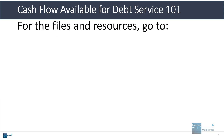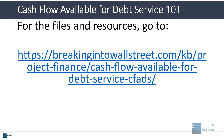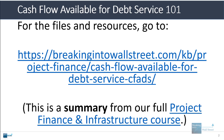For all the files and resources, you'll want to go to this URL. I'll paste this below the video and pin the comment there, so you can just click the link below the first pinned comment. Cash flow available for debt service, CFADS — if you just search for that and BIWS, you should find it, but it's easiest just to click that first comment.